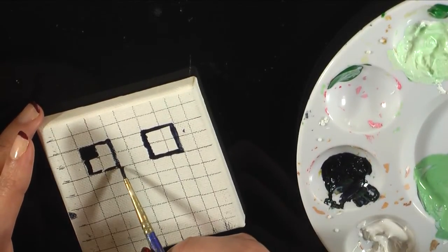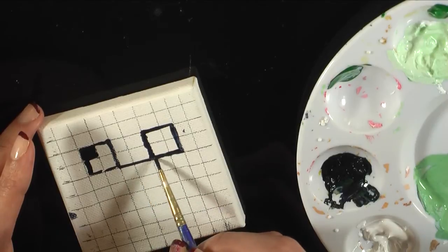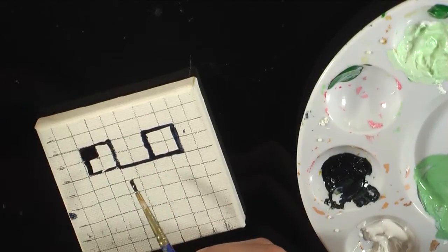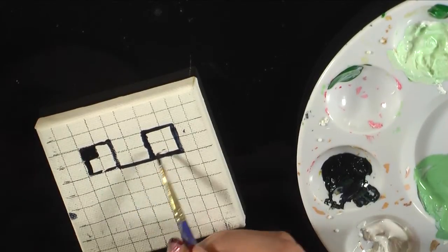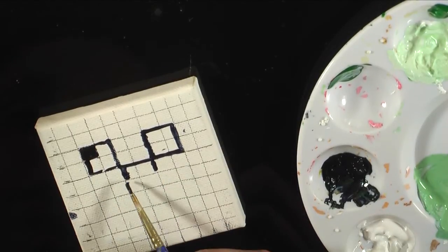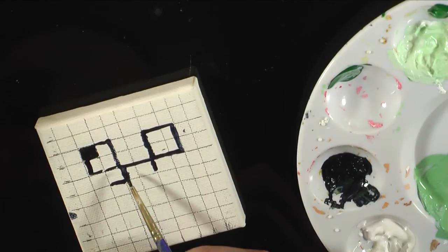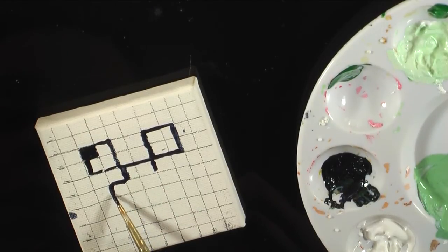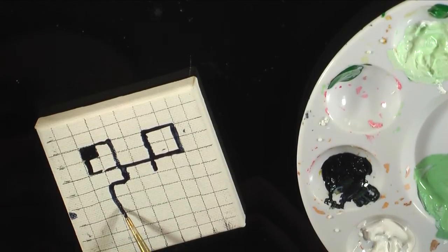The nose is going to be right in between these two eyes. And then the mouth is 1 block over from the nose and then down 3.